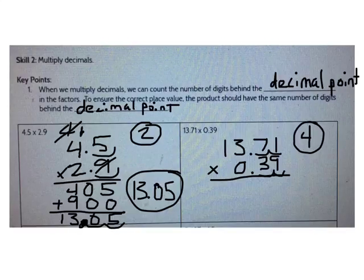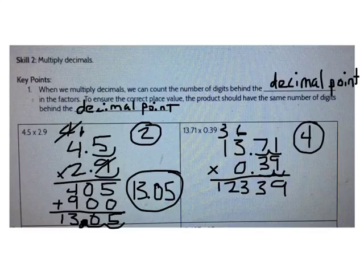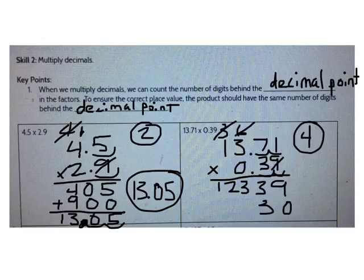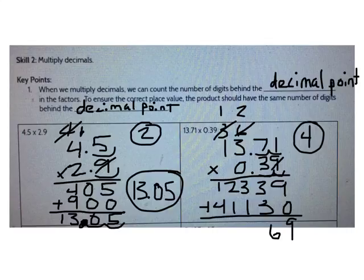Now I can multiply like normal. What's 9 times 1? It's 9. What's 9 times 7? It's 63. What's 9 times 3? It's 27. Plus 6 more is 33. What's 9 times 1? It's 9. Plus 3 more is 12. I'm done with the 9 so I can drop my 0. What's 3 times 1? It's 3. What's 3 times 7? It's 21. What's 3 times 3? It's 9. Plus 2 more is 11. What's 3 times 1? It's 3. Plus 1 more is 4.